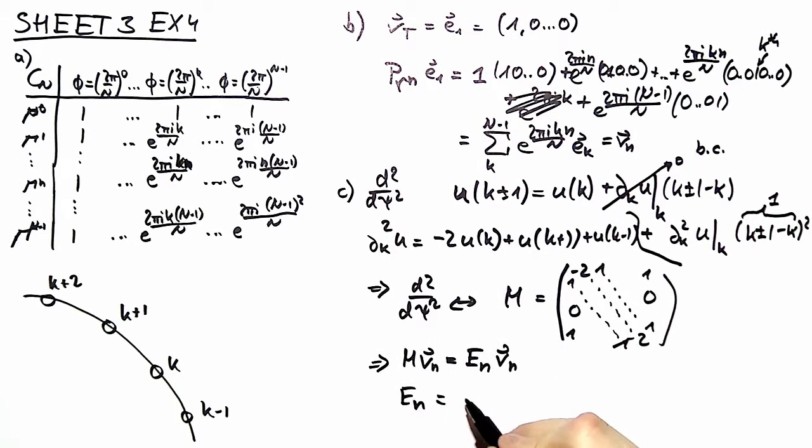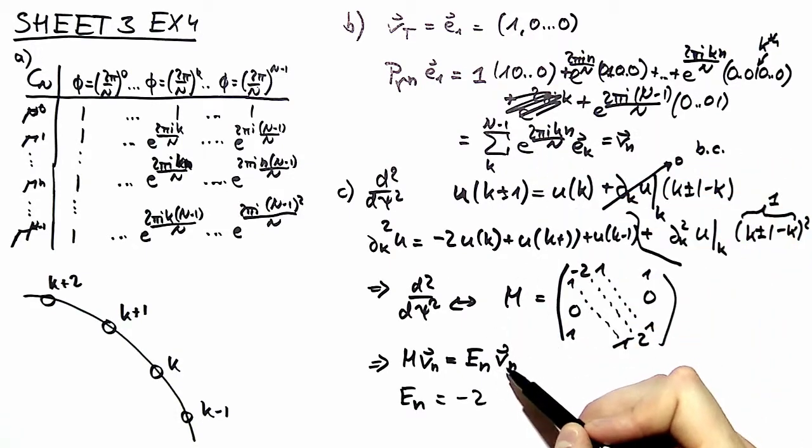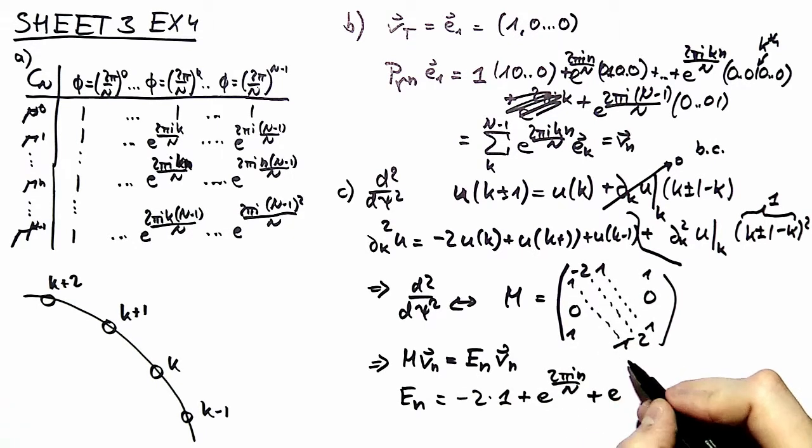So first we have minus 2 times. Now we have here our phase but we divide with the same phase so we end up with 1. We only acquire phase differences. In the forward direction we acquire 2 pi i n over N and in the backward direction we acquire 2 pi i N minus 1 over N.